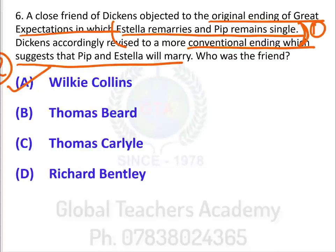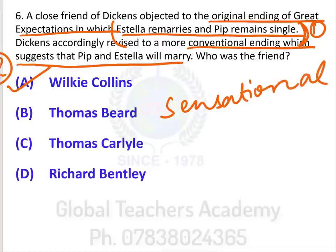A little bit about Wilkie Collins: he is supposed to be the inventor of a novel form called the Sensational Novel. He's written many novels, many plays, and more than a hundred nonfiction pieces, though he is not as prominent as someone like Charles Dickens.